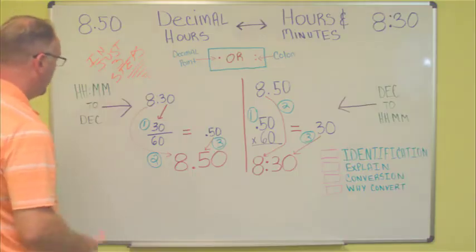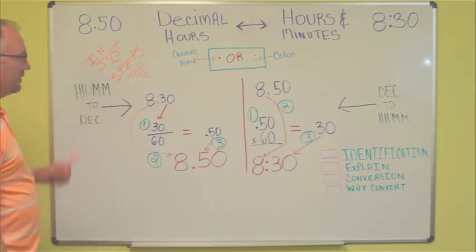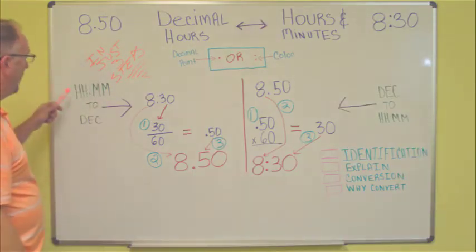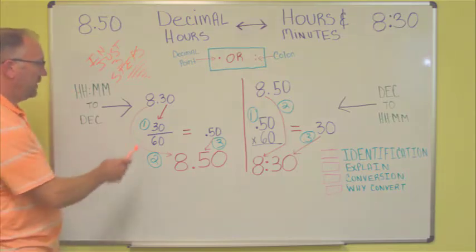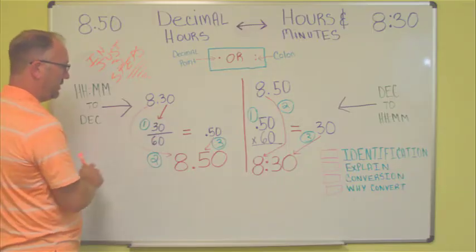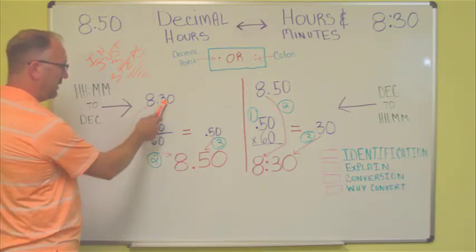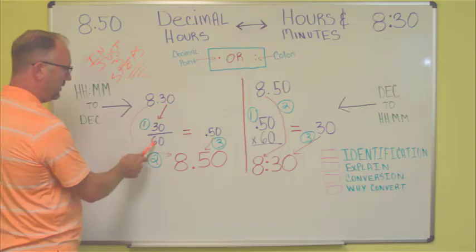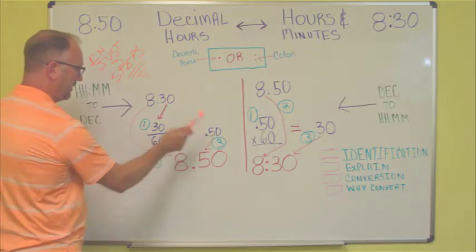Next, we'll talk about the conversion. It only takes three steps. We want to do hours and minutes to decimal. We take the initial hours and minutes, which is 8:30. The first step is to divide the minutes portion, which is 30 divided by 60, equals .50.